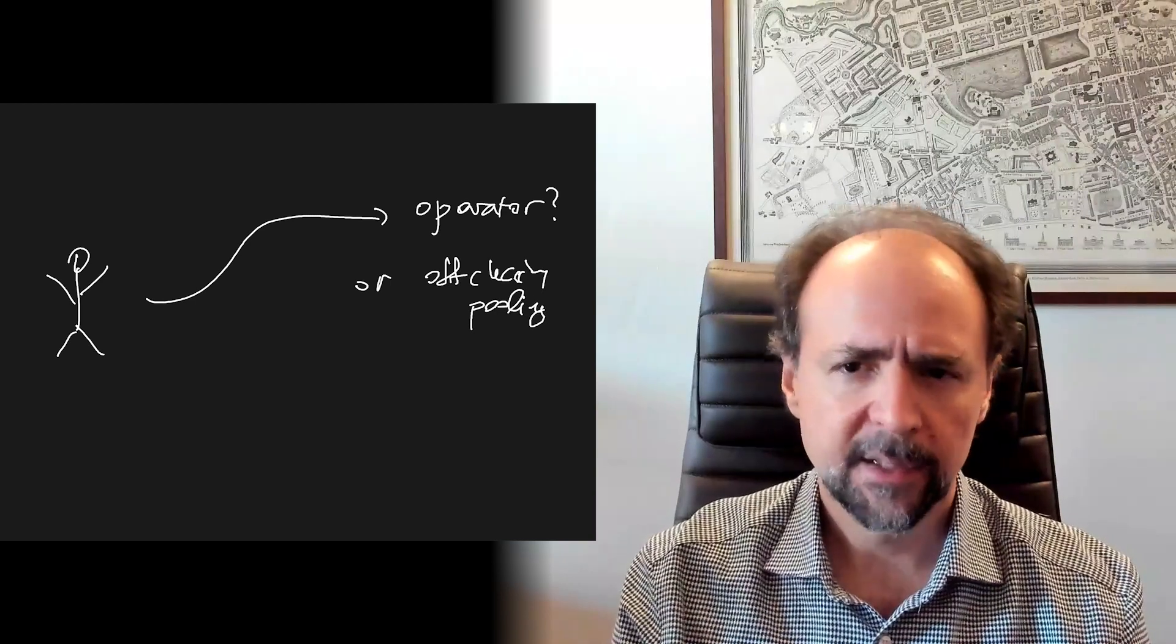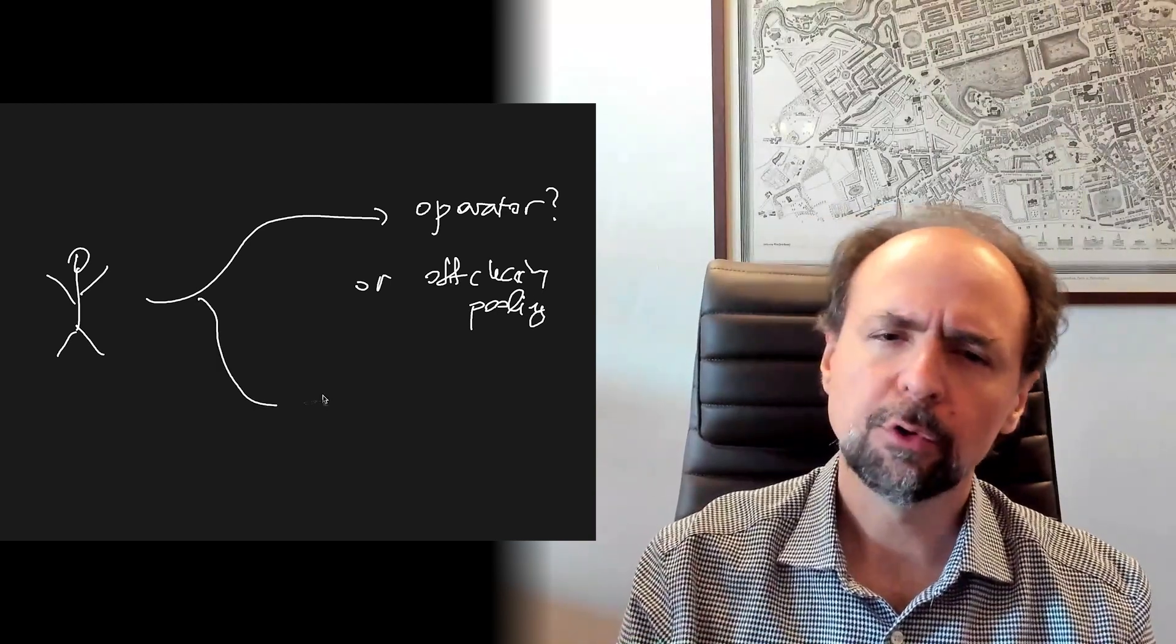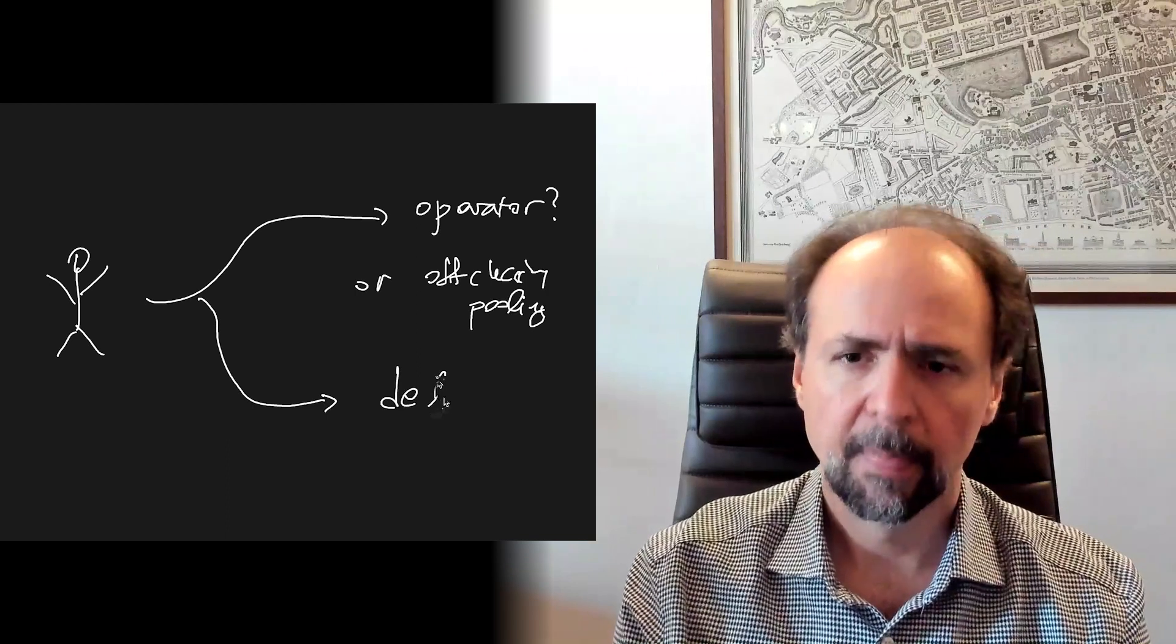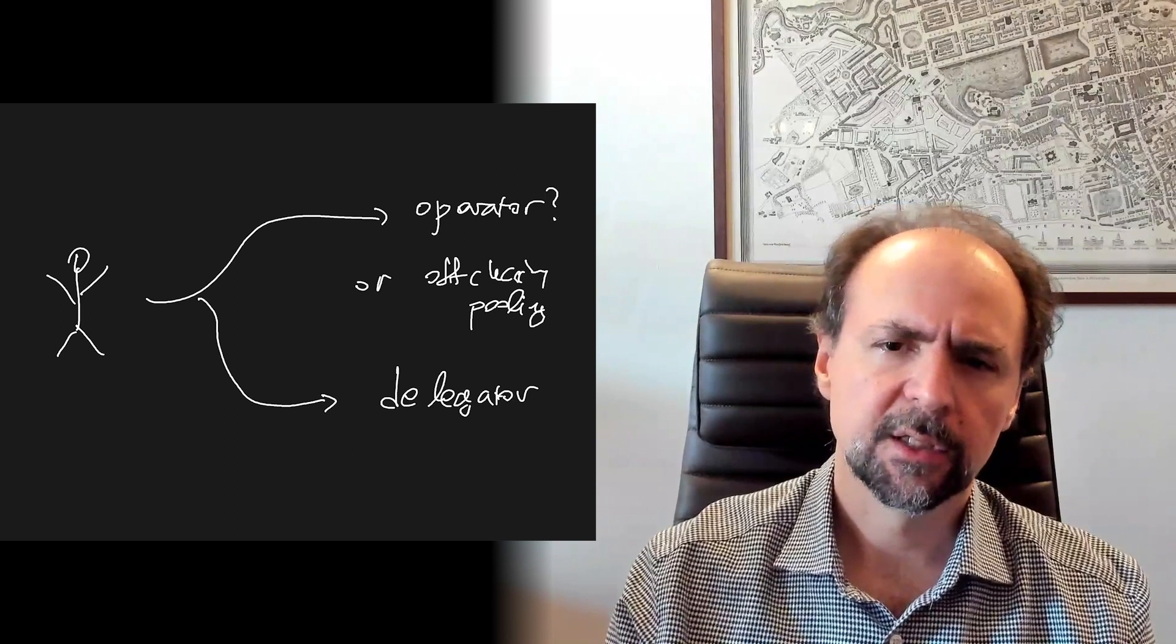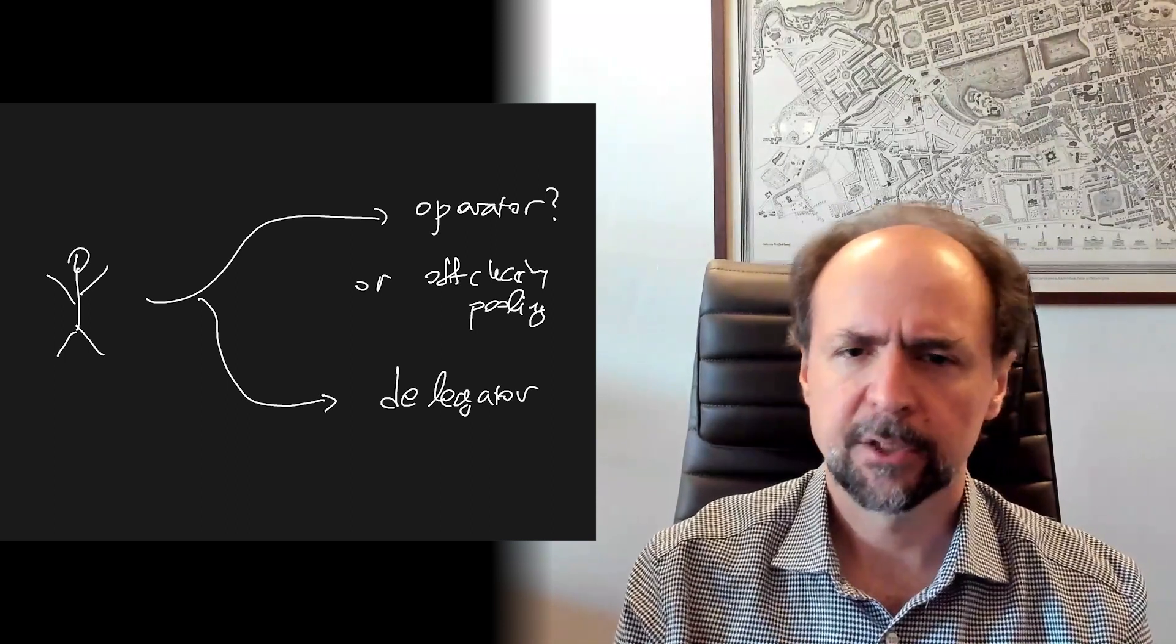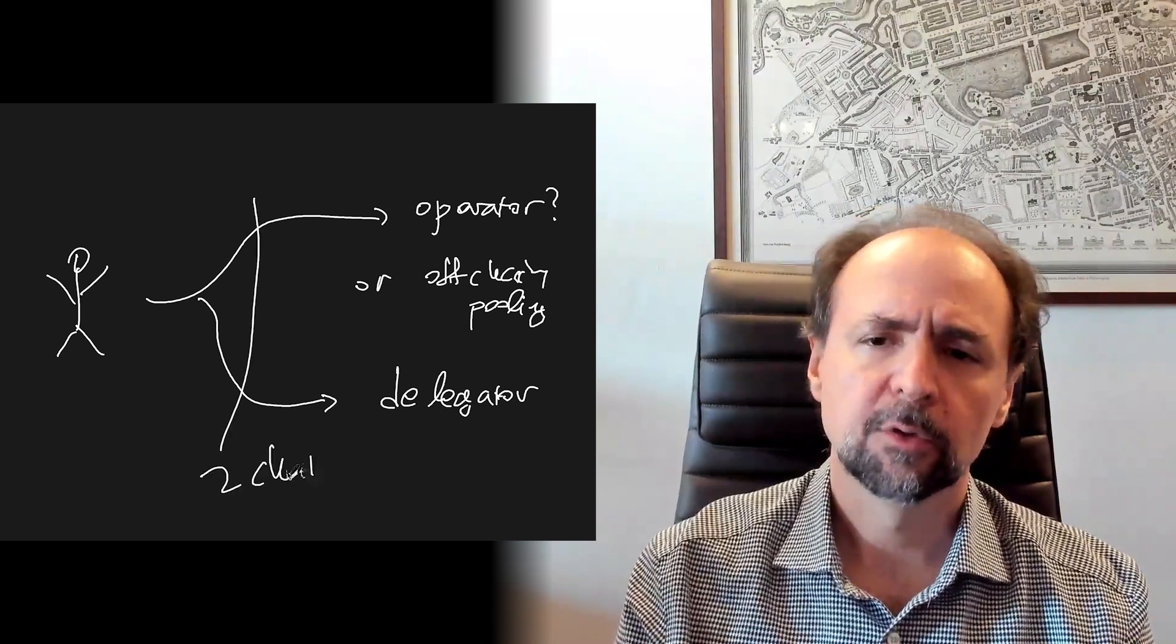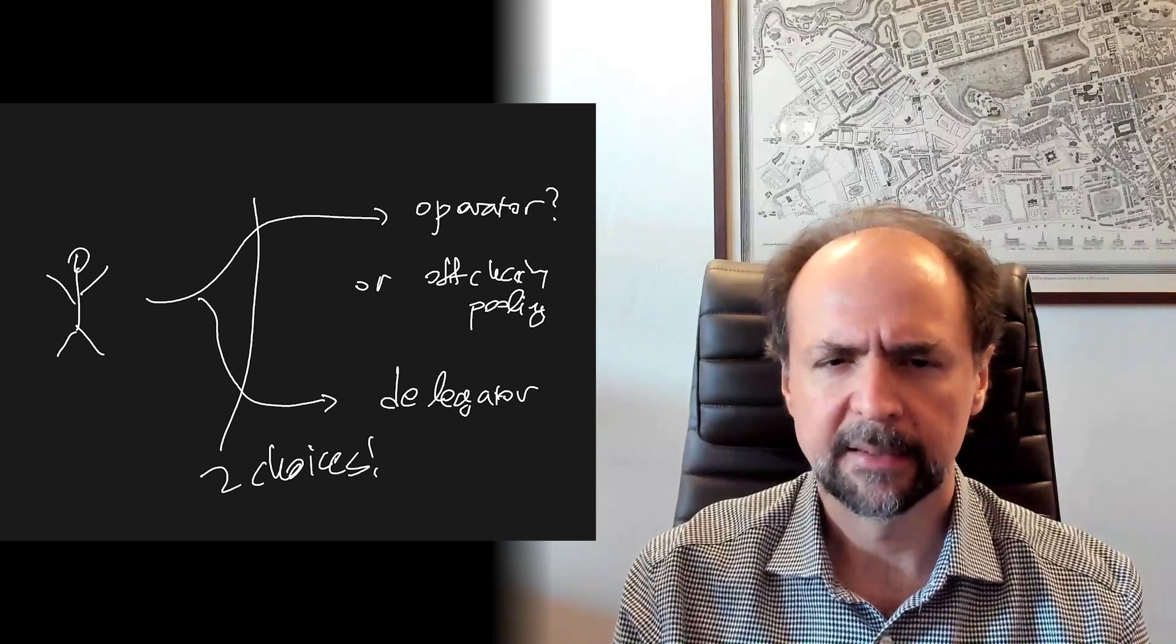Instead, using our on-chain pooling mechanism, the stakeholder has now two options to engage with the protocol, be an operator or a delegator. And having these two choices leads to higher participation and transparency, as well as, ultimately, better decentralization.